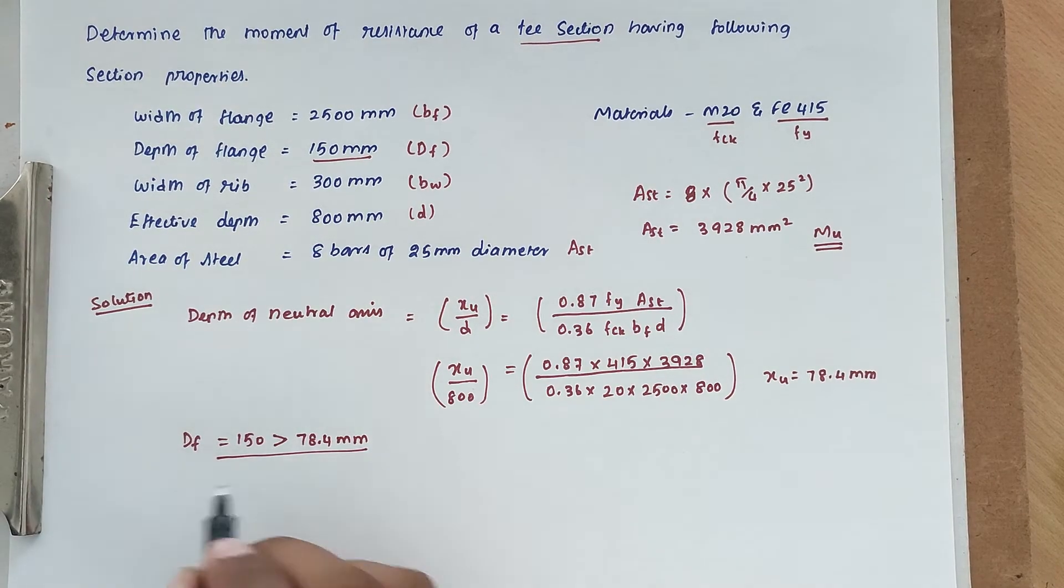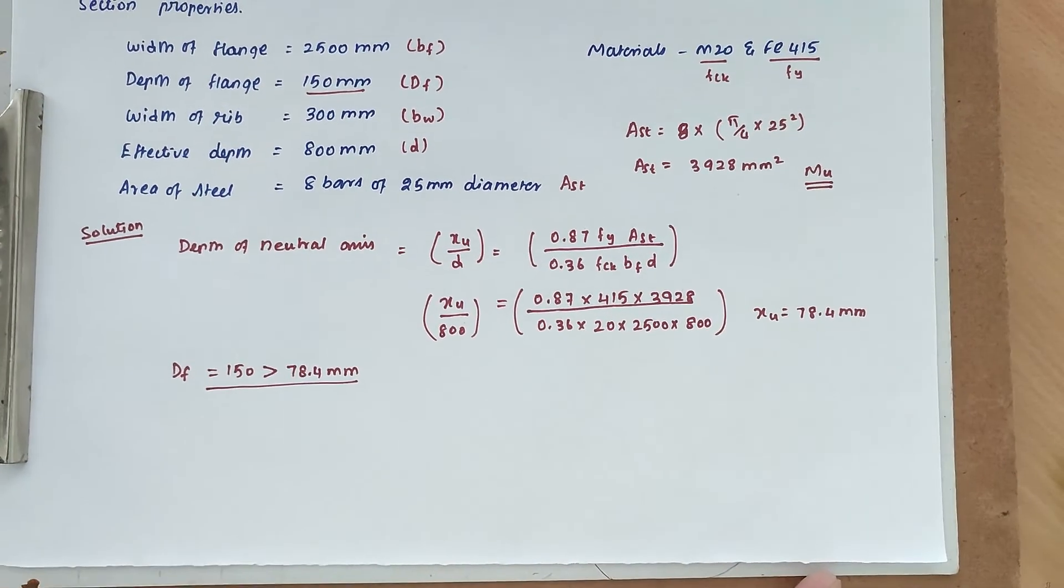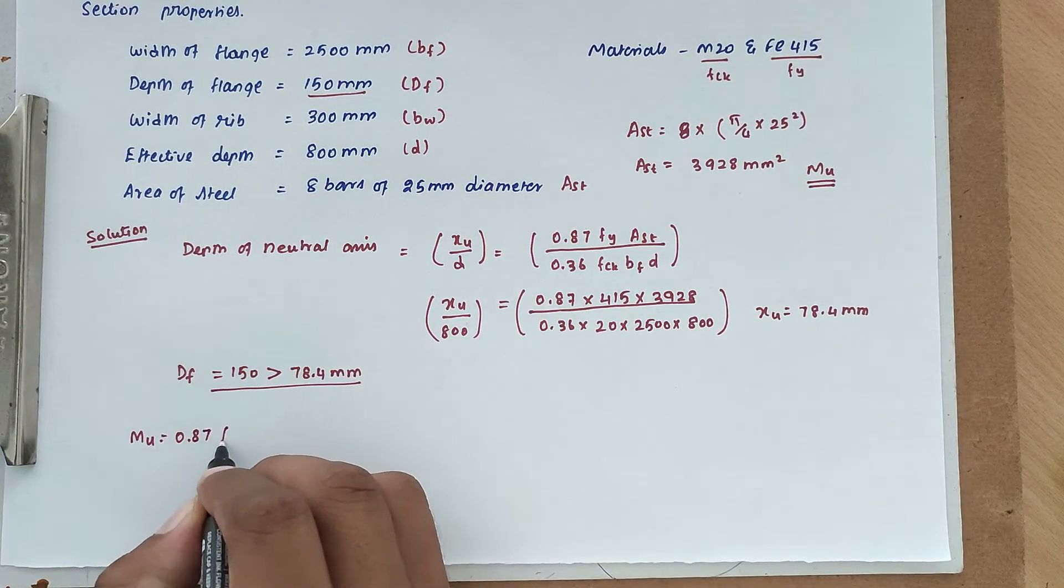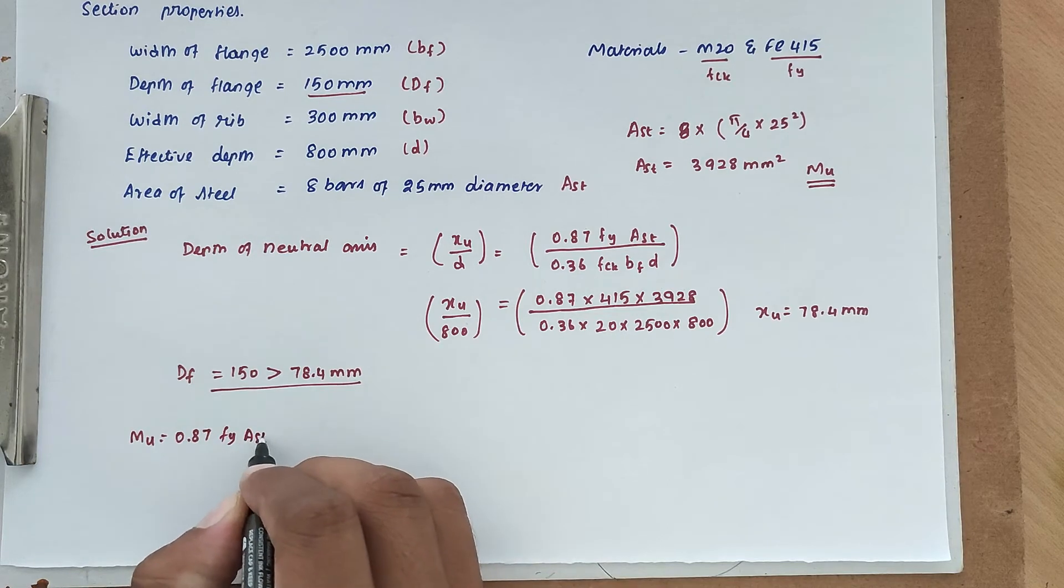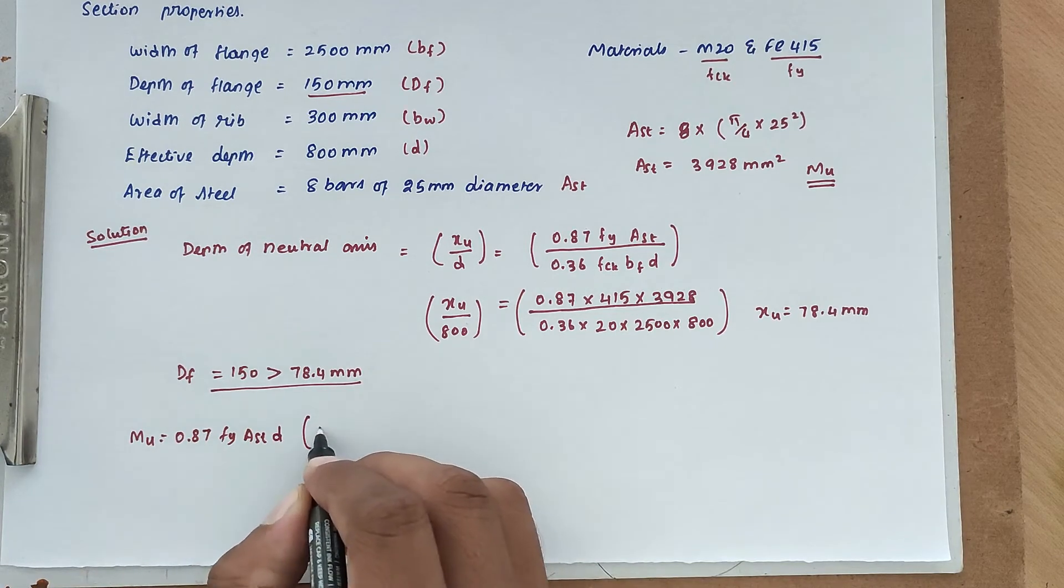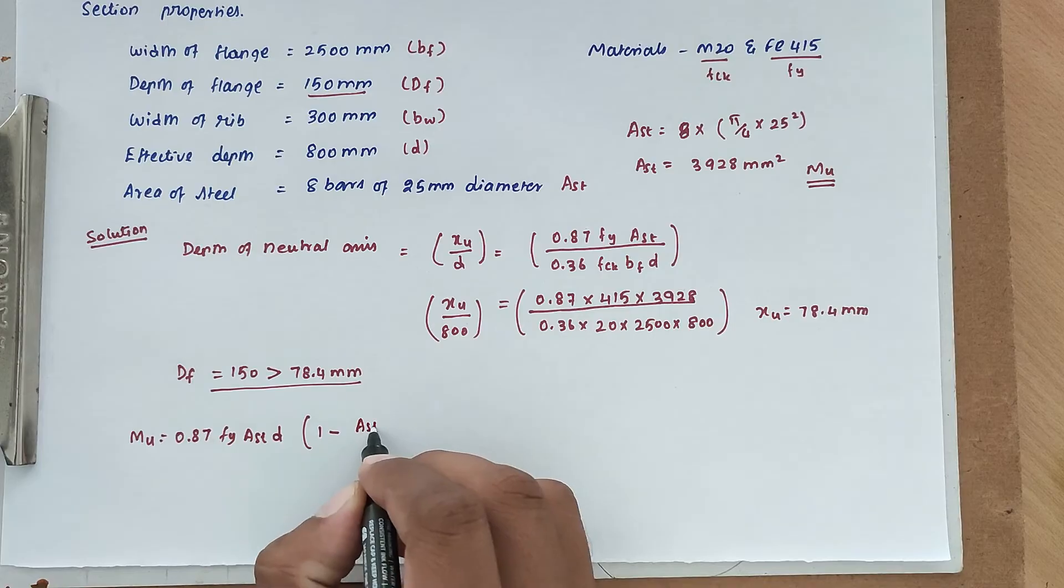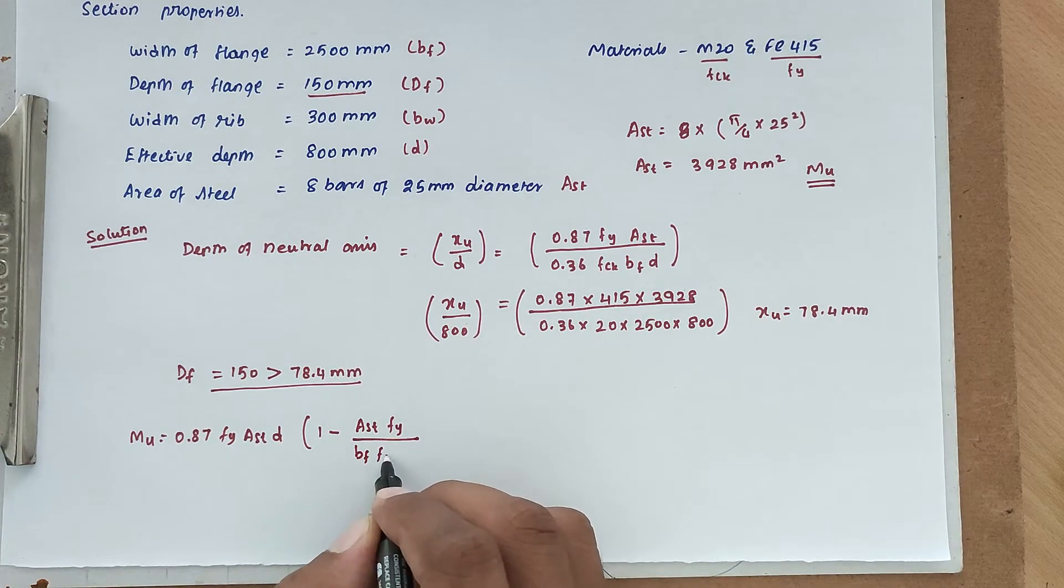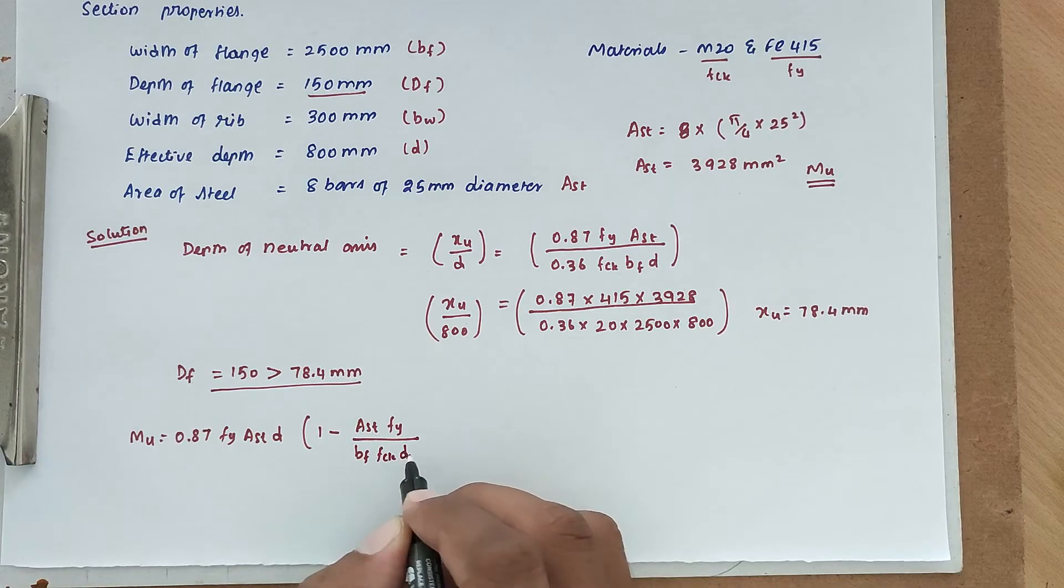Now we can find out the moment of resistance MU value. The formula will be MU equal to 0.87 FY AST into D into 1 minus AST FY divided by BF into FCK D.